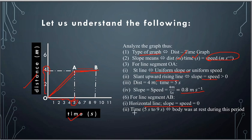For how many seconds did the body not move? The horizontal segment AB goes from 5 seconds to 9 seconds — a duration of 4 seconds. During this period, from 5 seconds to 9 seconds, for 4 seconds, the body was at rest.